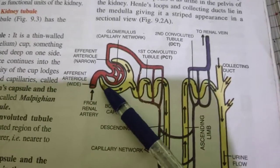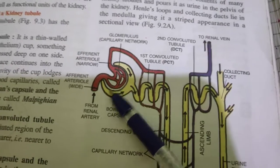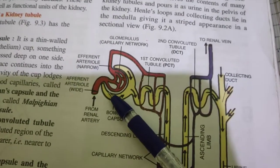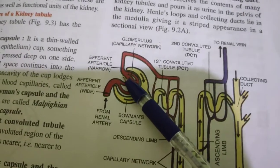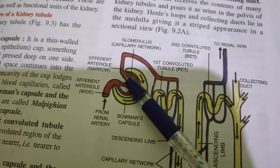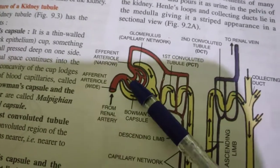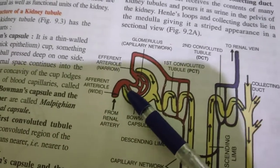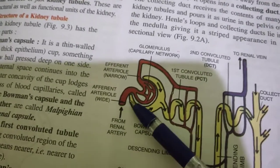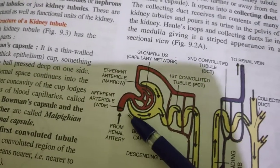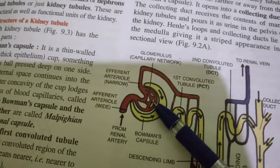The blood flows through the glomerulus under great pressure. What's the reason of this great pressure? The reason is that the efferent arteriole is narrower than the efferent arteriole. This high pressure causes the liquid part of blood to filter out from the glomerulus into the renal tubule. This filtration is called ultrafiltration.